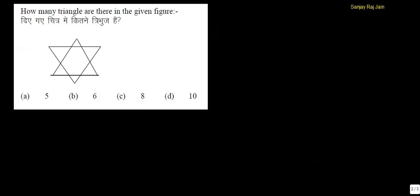This is also a very good question. So first thing we do is, we will mark these vertices. For example, A, B, C, D, E, F, G, H, I, J, K, L. So first thing we do is, we count single triangles.